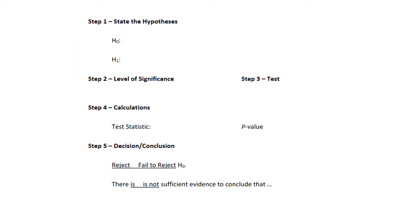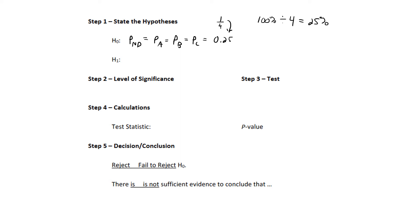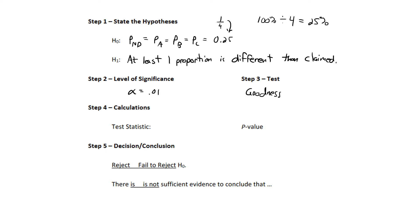The null hypothesis is that all four proportions are equal: the proportion for non-dairy equals the proportion for A, equals the proportion for B, equals the proportion for C, which equals 0.25 or 25% — dividing 100% into four equal groups. H sub 1 is that at least one proportion is different than claimed. The level of significance is 0.01, and this is a goodness of fit test.